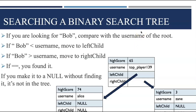When searching your binary search tree, we have high scores and usernames associated with every node. Let's say I'm looking for the name Bob. I'm going to compare it with the root node — Bob would be less than top player 139, so I'll look on the left side and compare Bob with that node. You move either to the right or left subtree. If you find it, you can update the high score. If you reach the bottom and hit a null without finding your value, that means Bob was not in the binary search tree.